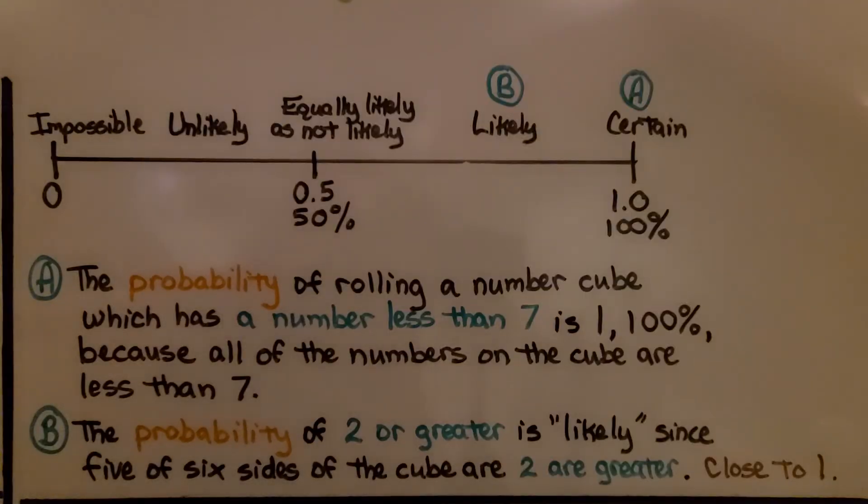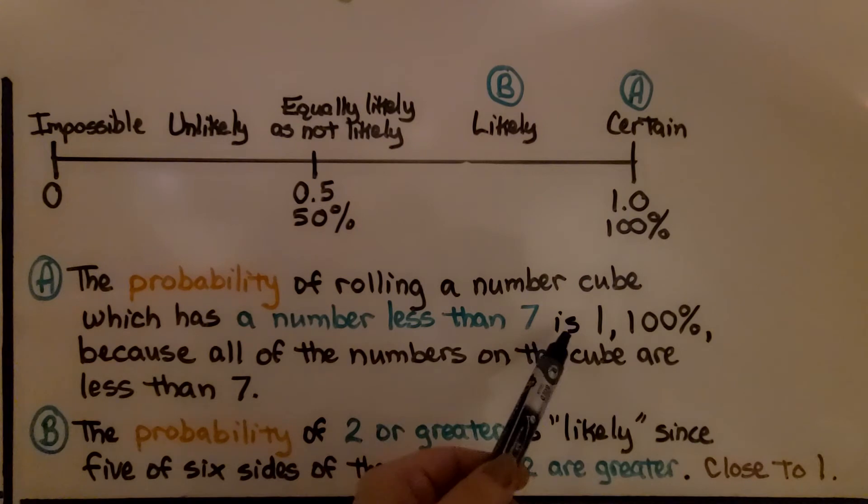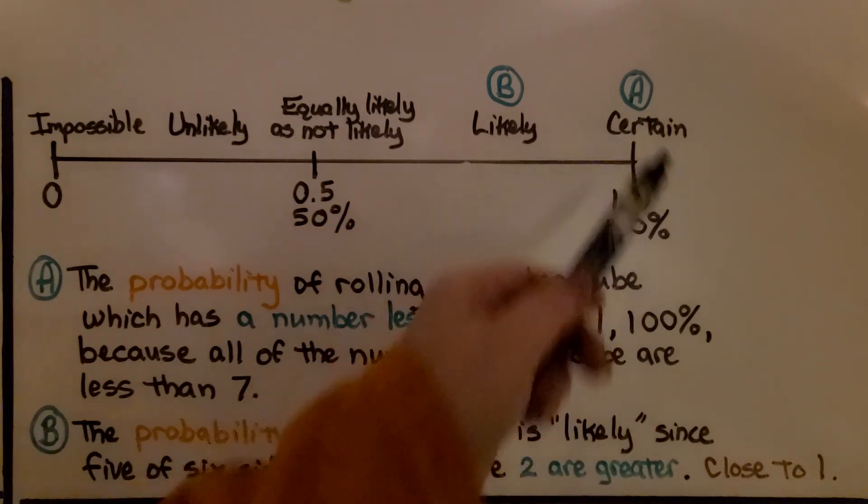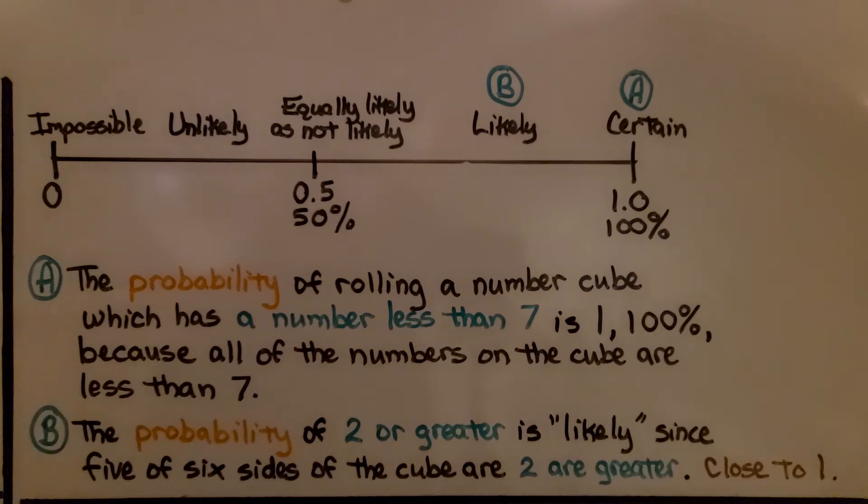Let's try a couple more. Event A says the probability of rolling a number cube which has a number less than seven. Well, all the numbers on a six-sided cube are less than seven. So rolling a number less than seven is one. It's 100%. It's certain it's going to be less than seven. All of the numbers on the cube are less than seven. We have one through six.